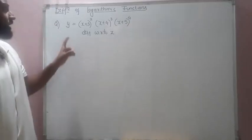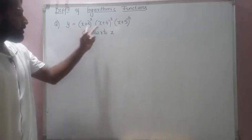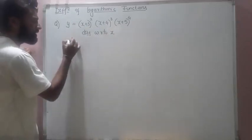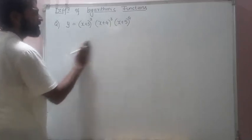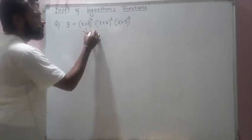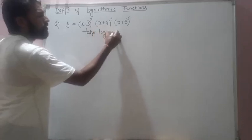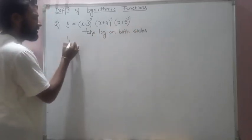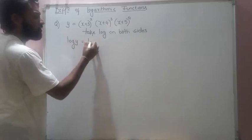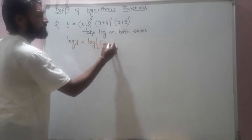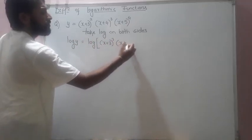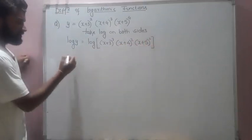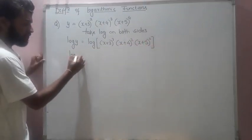Now I have y equal to a product of three functions. What we'll do is take log on both sides instead of differentiating directly with respect to x. After taking log on both sides, we get log y is equal to log of (x+3)² times (x+4)³ times (x+5)⁴.